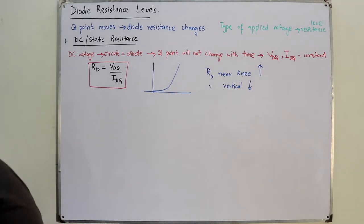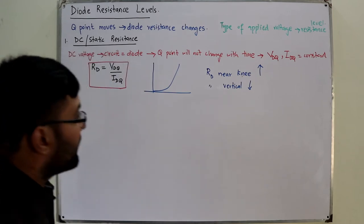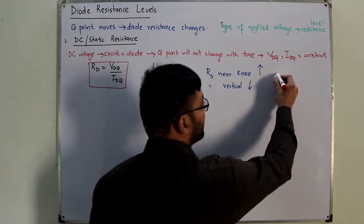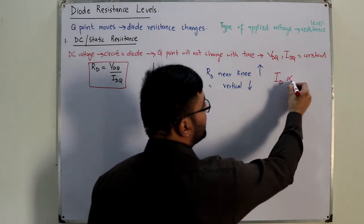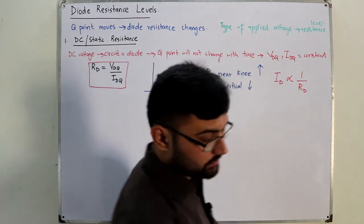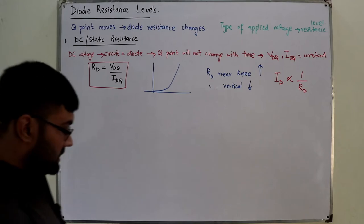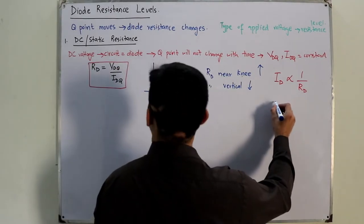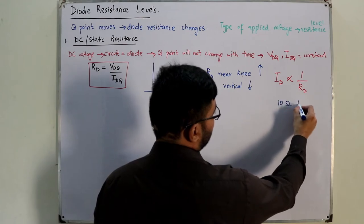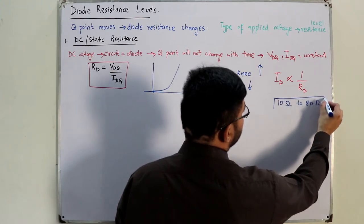We will see through an example. The book has an example. In general, the higher the current through a diode, the lower is the DC resistance level. So the higher the current through a diode Id, the lower is the DC resistance level of the diode. Typically, the DC resistance of a diode will range from about 10 ohms to 80 ohms. This is the range, the DC resistance value.